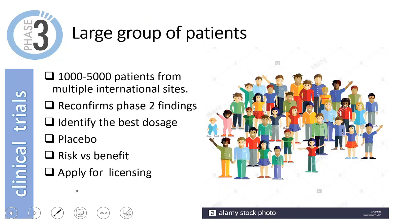In phase three, the drug is used on a large group of patients — between 1,000 and 5,000 — from multiple international sites, to see if the drug is effective across different populations. Side effects continue to be monitored from phase one and phase two, reconfirming phase two findings and identifying the best dosage. Placebo is still used, and a double-blind test is applied where neither the doctor nor the patient knows which is the placebo and which is the real drug. The stage concludes with a risk versus benefit assessment, and 10% of possible treatments may still fail here.